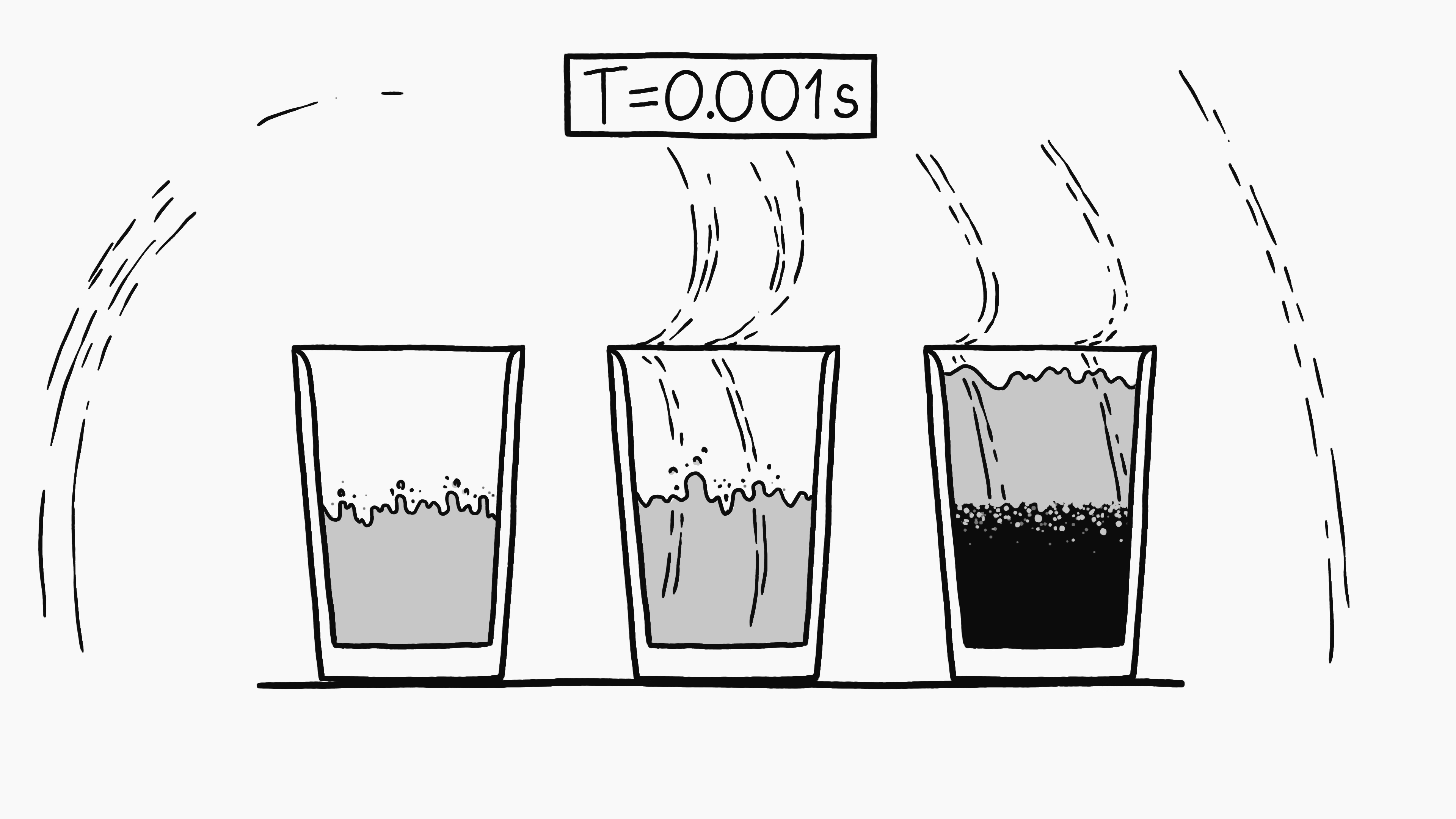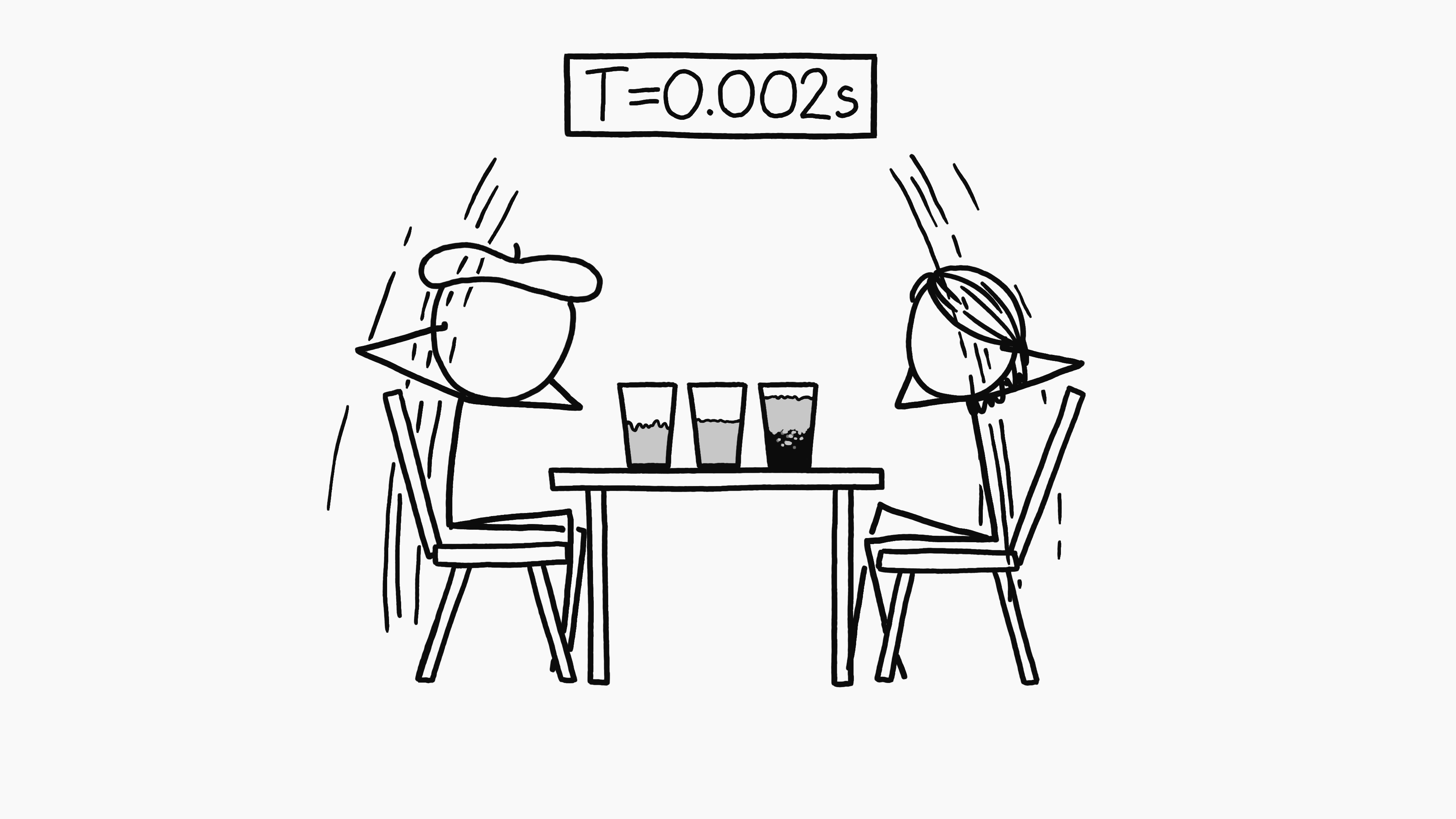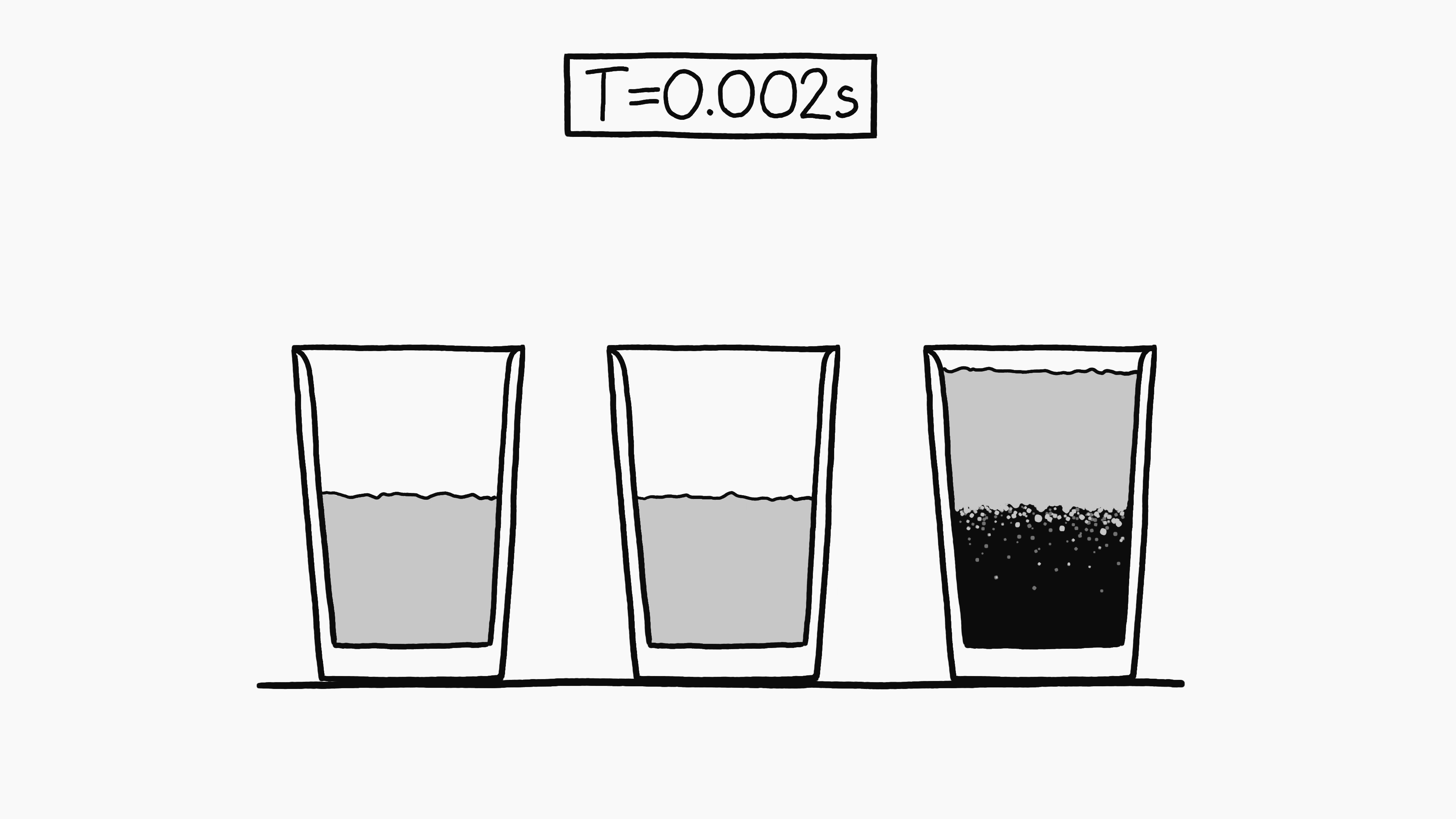The shock wave from the vacuum collapse takes around a millisecond to spread out through the other two glasses, which both flex slightly as the wave passes through them. In a few more milliseconds, the shock wave reaches the human's ears as a loud bang. Around this time, the glass on the right starts to visibly lift into the air.